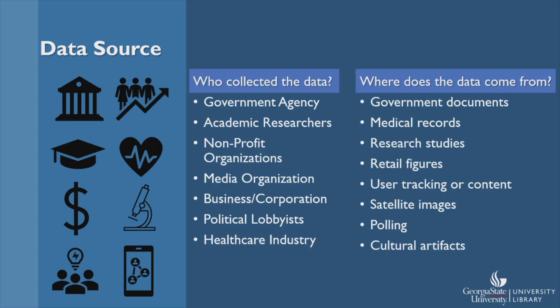Knowing the source of the data can help you determine if the data is trustworthy or ascertain if there is an agenda behind the data collection or data analysis. For example, academic researchers may have different motives in data collection compared to political lobbyists. Also, knowing where the data comes from is important for understanding any conclusions that are made using that data. For example, medical records can be a great source of data, but they may not be representative of the health of people in general, since those with medical records would need to have access to health care services. Potentially healthy people or those who cannot afford health services may not be included in medical records. We will discuss these issues more in our next video about sampling.